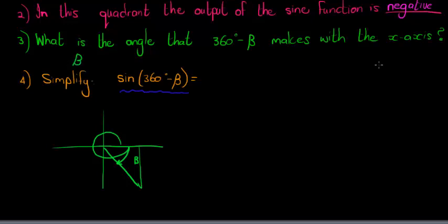Now if we had to simplify, here we see that this can be simplified into sine of beta, but sine of beta would be talking about this triangle, which is in the first quadrant and is positive. And we already saw that we are in the fourth quadrant where sine is negative, so we must multiply this positive output with a negative to get the correct output for sine of 360 minus beta.